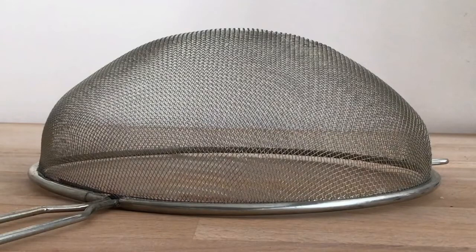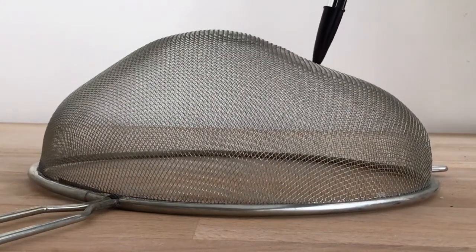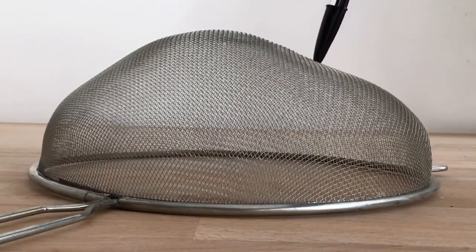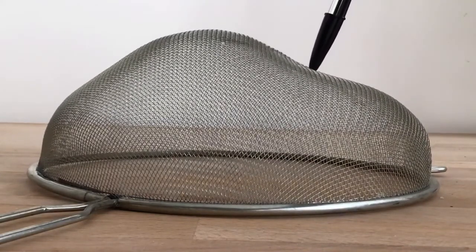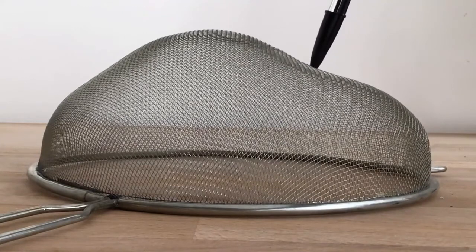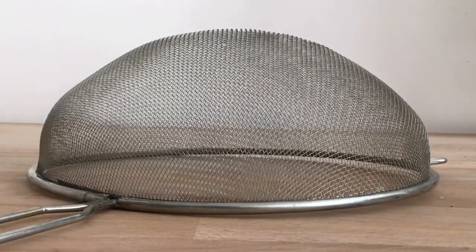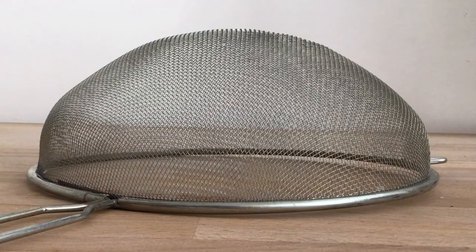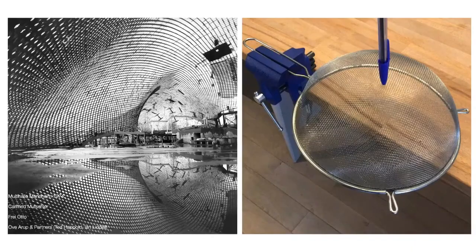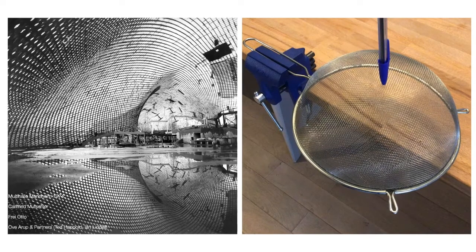Here we have a kitchen sieve, which is not triangulated. It's got two sets of wires only. When we load it downwards on the right, we get an overall deformation and it moves inwards on the left, which is not what we would expect. The sieve behaves very much like a timber lattice shell, such as the Multihalle in Mannheim.